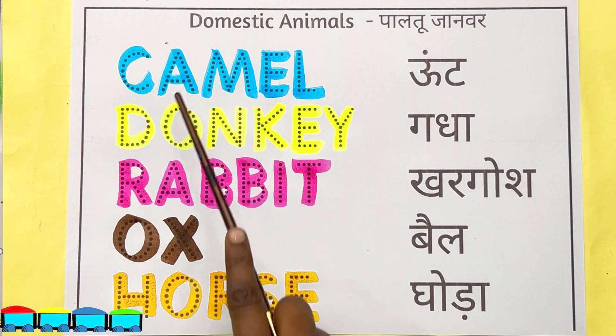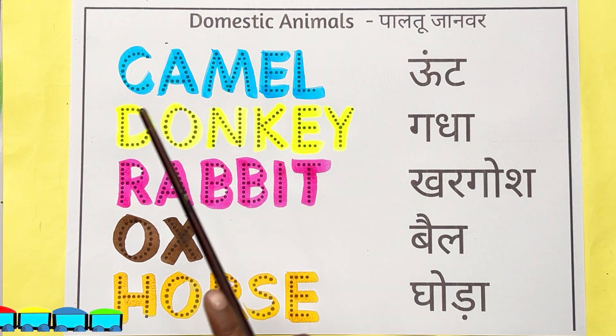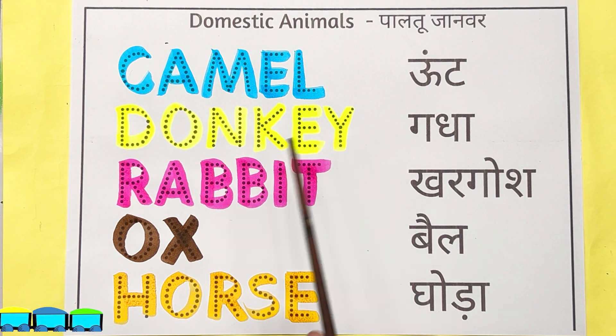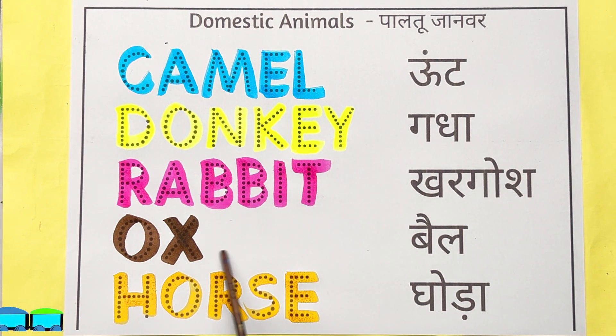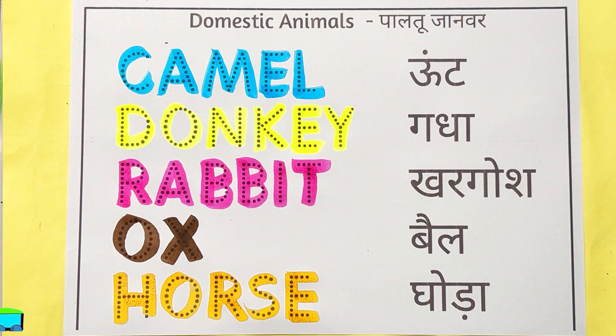So kids, let's repeat it. Camel, donkey, rabbit, ox, horse.